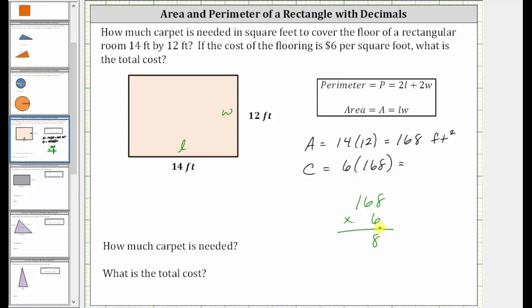Let's determine 168 times 6. Six times eight is 48. Perform an exchange with the four. Six times six is 36, plus four is 40. Record the zero. Perform an exchange with the four. The product is 1008. And this is the total cost, which is $1,008.